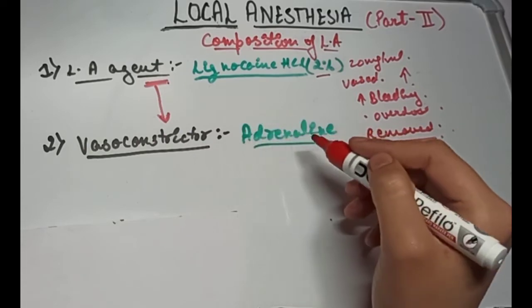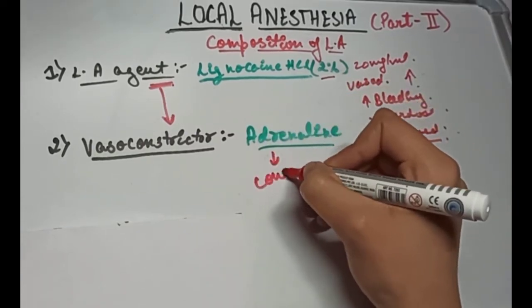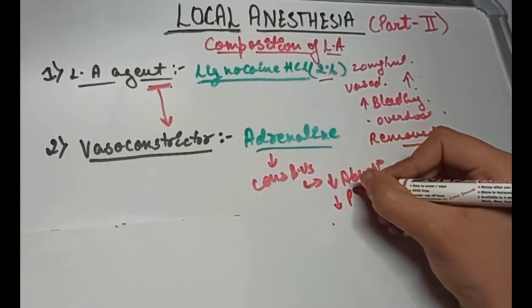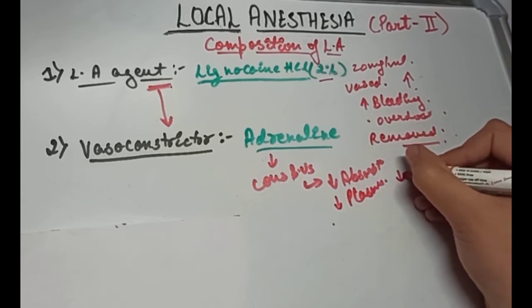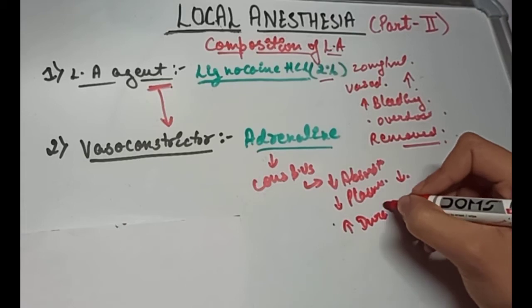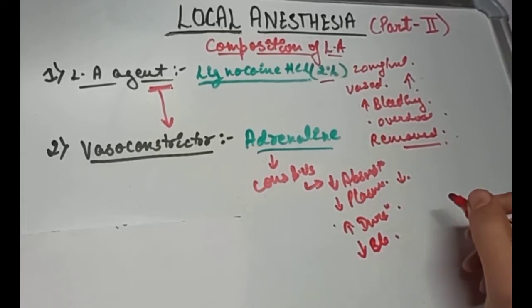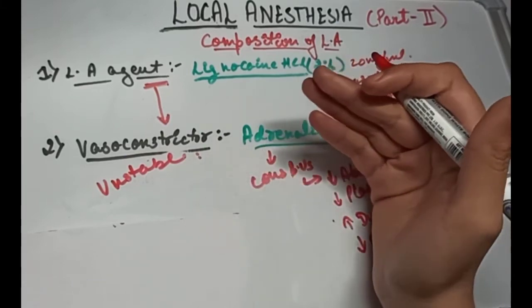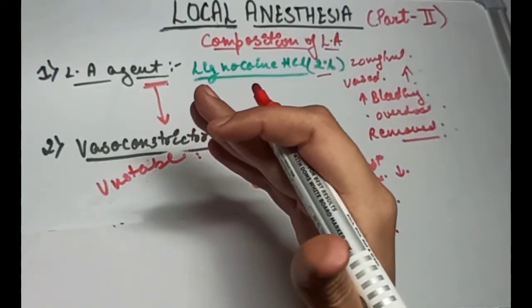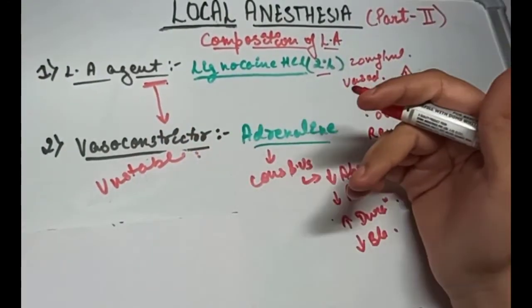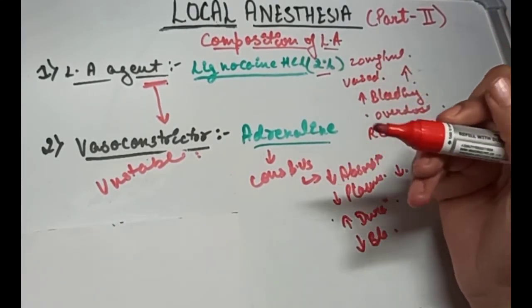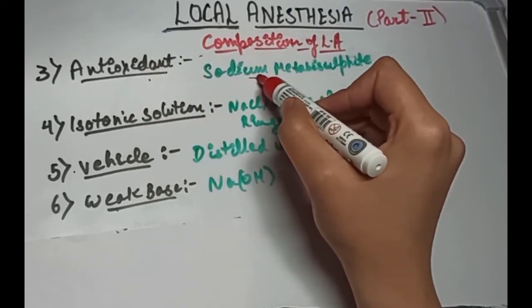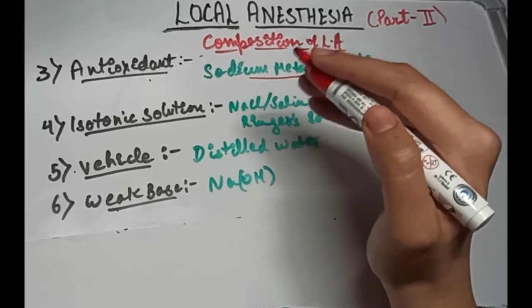The most commonly used vasoconstrictor is adrenaline. Adrenaline constricts the blood vessels, thereby decreasing the absorption of LA, decreasing the plasma level of LA and thereby decreasing the risk of toxicity, increasing the duration of action of LA, and decreasing the bleeding at the site of injection. But this vasoconstrictor is very unstable in solution and readily undergoes oxidation in the presence of sunlight. The solution appears brown or pink on oxidation, thereby decreasing the shelf life of the LA. So to ensure sufficient shelf life, we add a substance that reacts with the oxygen before the vasoconstrictor. It is an antioxidant, that is sodium metabisulfite, which competes for the available oxygen.